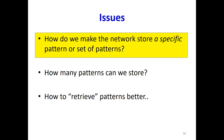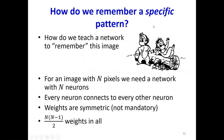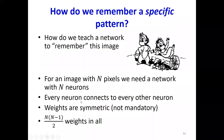But then here's the million dollar question. In that example, how did he design the network to store the clown, the penguin, and the globe? How do you make the network store a specific pattern or set of patterns? How many patterns can be stored? And how can you set it up to retrieve these patterns better?